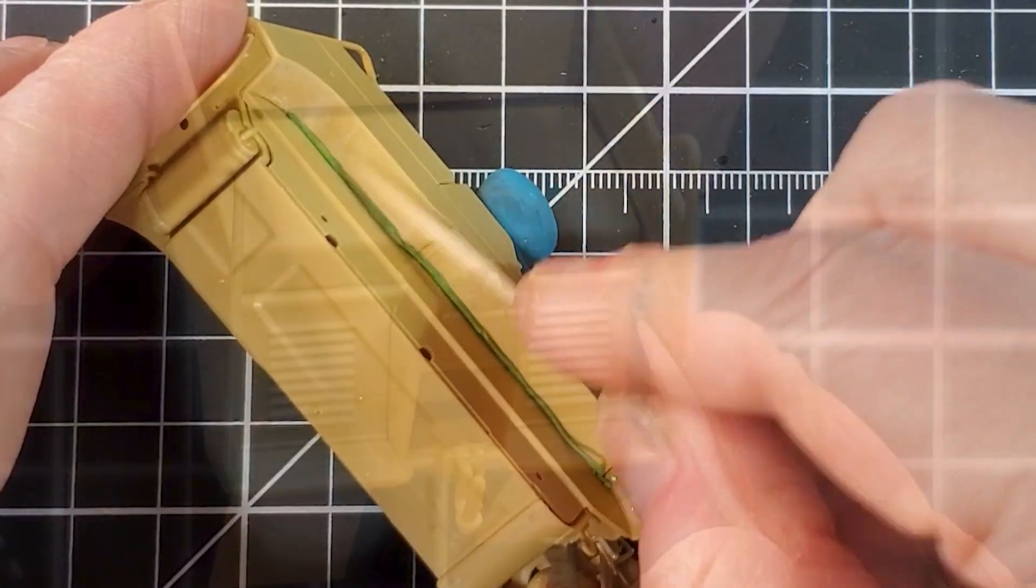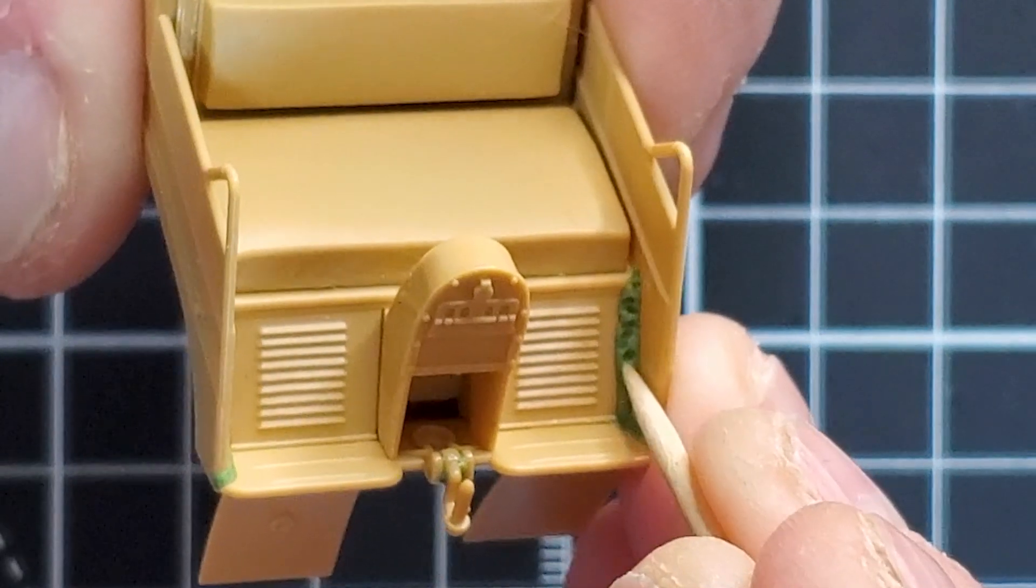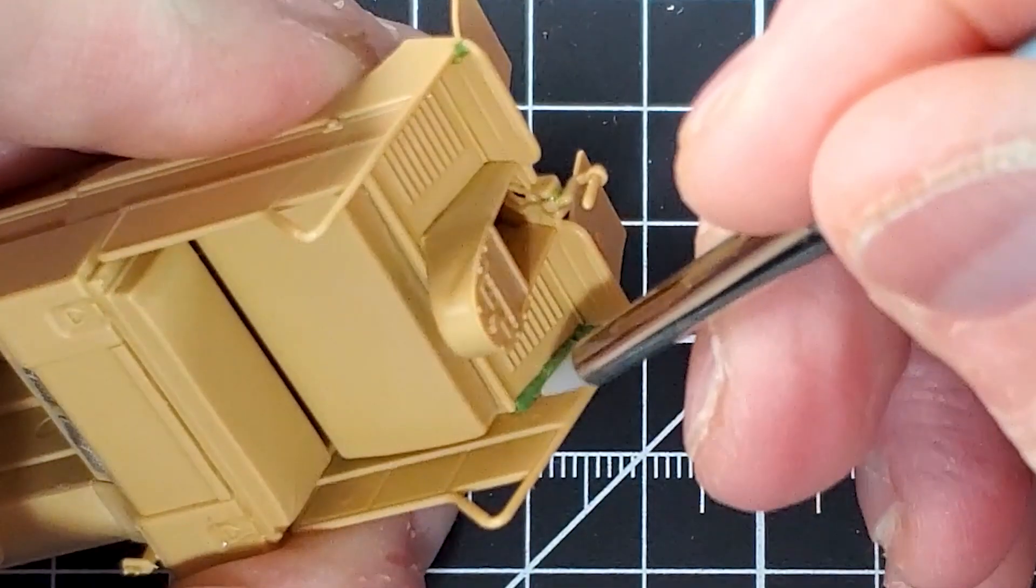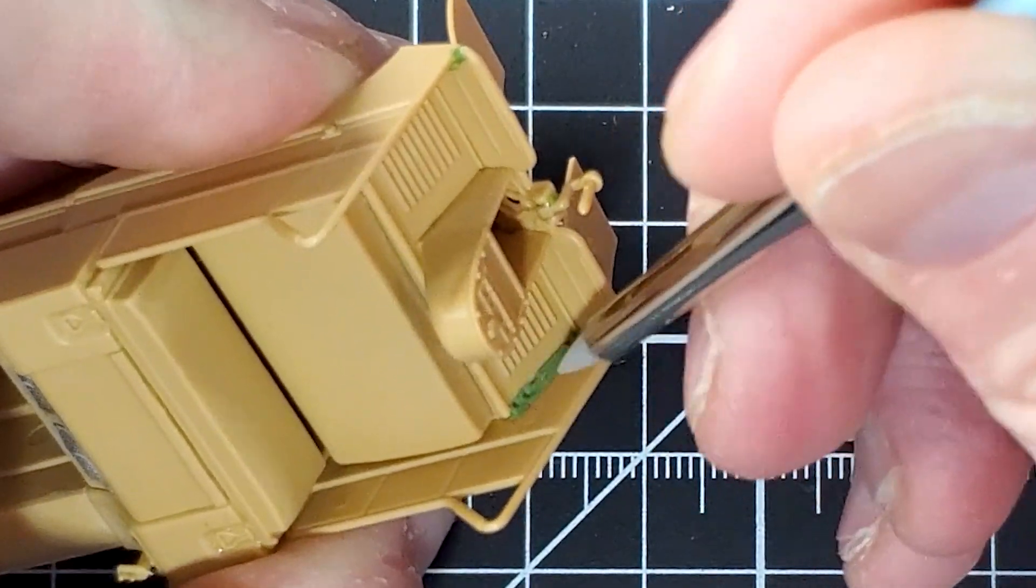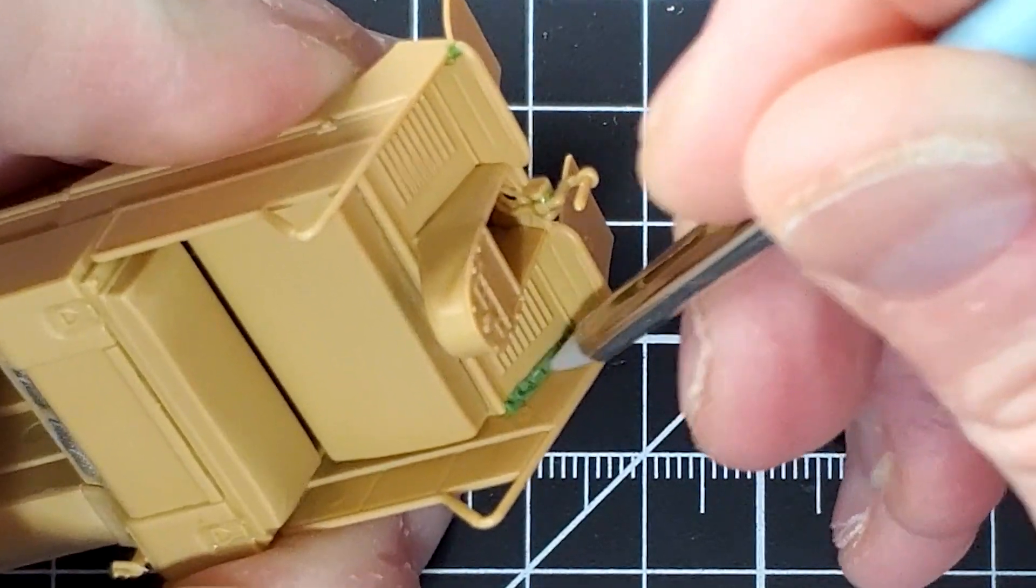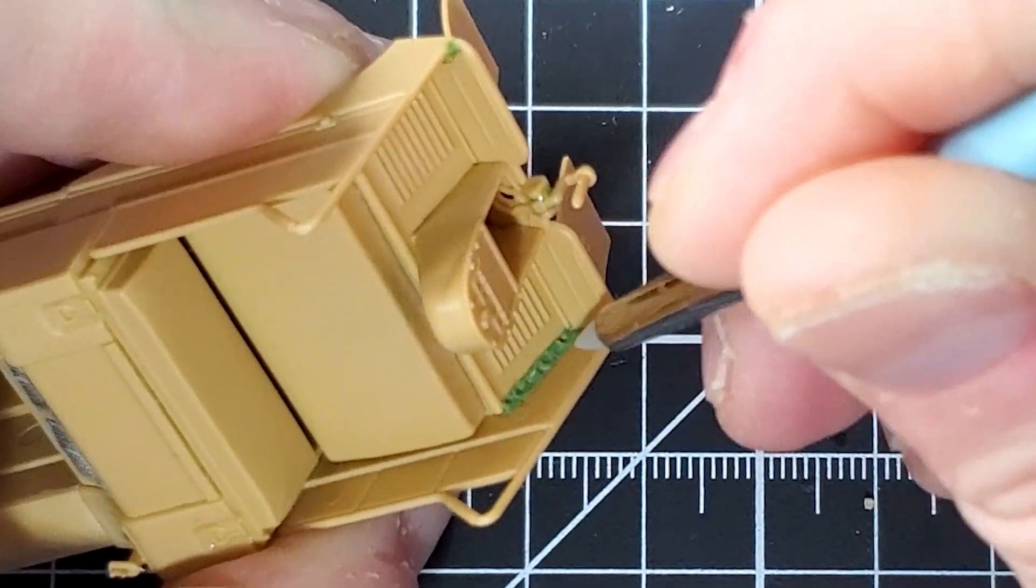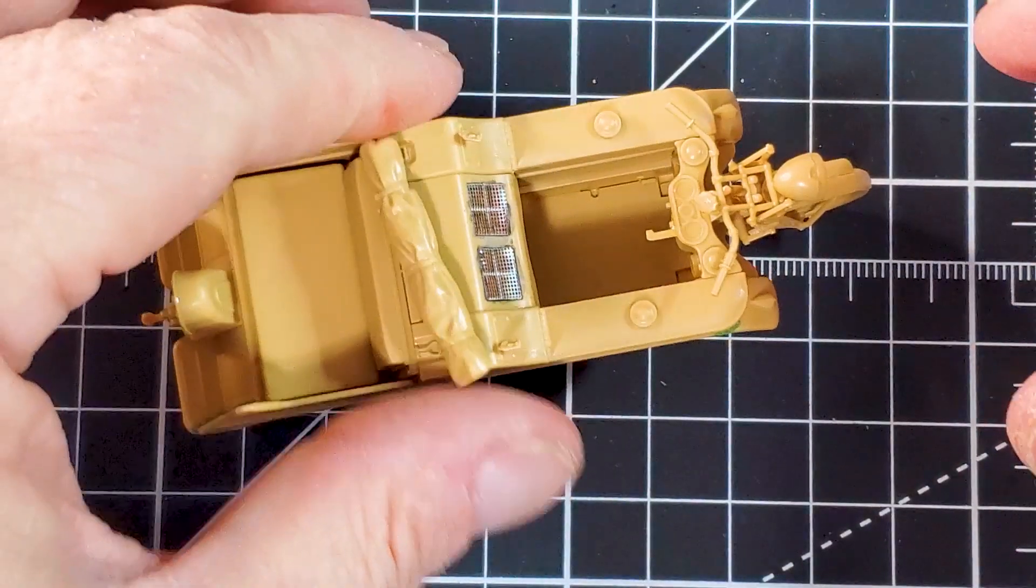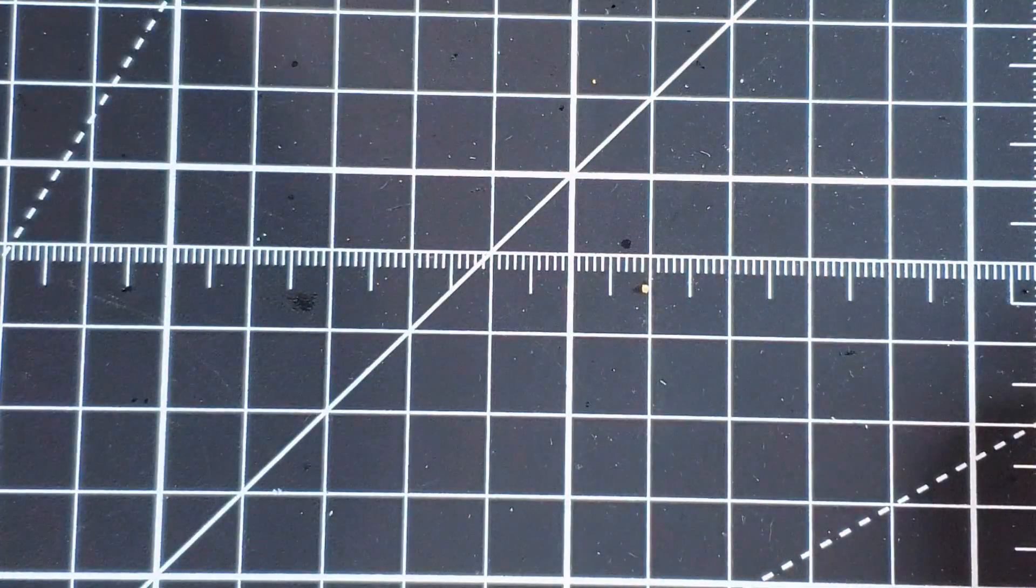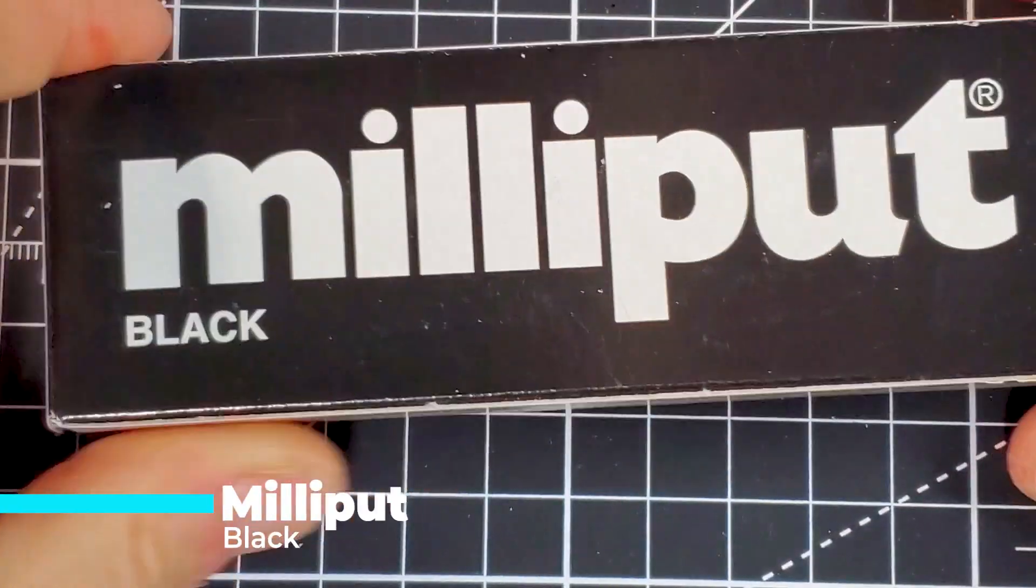I'm always looking to add something different to any of the models that I build. The weld seams are a really good and super cheap option, and it's gonna give a lot more texture and a lot more realism to your tank.